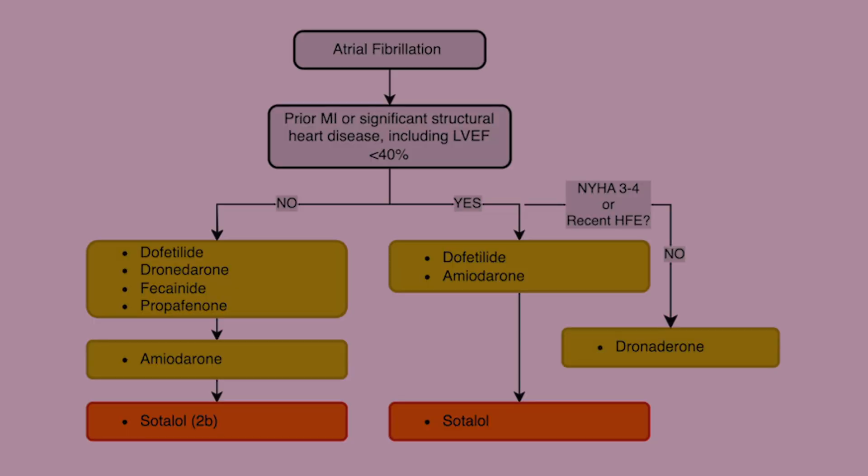Regarding efficacy of anti-arrhythmic drugs for maintaining sinus rhythm: amiodarone is the highest at about 65 percent, dofetilide at about 50 to 65 percent, and other drugs around 30 to 50 percent. However, start with the safer, less effective option first. The goal should be pragmatic — reducing symptoms and AF burden may be sufficient. Note that anti-arrhythmic drugs do not increase mortality, except for amiodarone and sotalol, which do have some increased mortality signals.